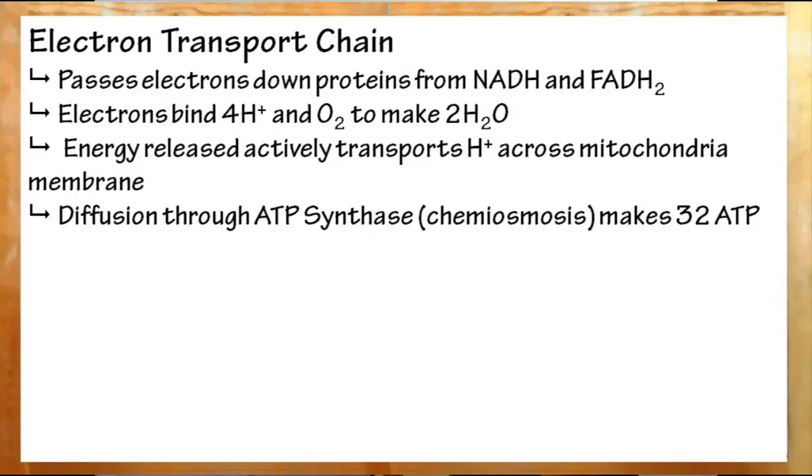All the NADH and FADH2 you've so far created will go into the electron transport chain and donate their electrons. The movement of electrons releases their energy and moves H plus ions across the membrane in mitochondria. This creates a strong gradient of H plus on this side, so they'll diffuse through ATP synthase to make the gradients equal again. Doing so produces ATP from ADP, for a grand total of 36 ATP throughout cellular respiration.